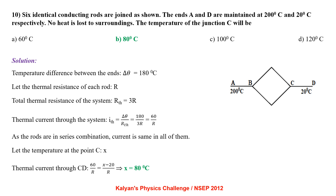6 identical conducting rods are joined. The ends A and D are maintained at 200°C and 20°C respectively, and no heat is lost to the surroundings. Temperature difference Δθ = 180°C. Let thermal resistance of each rod be R. Total thermal resistance = 3R. Thermal current I = 180/(3R) = 60/R. Since rods are in series, current is same in all. Let temperature at C be x: 60/R = (x−20)/R, giving x = 80°C.